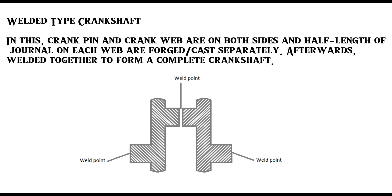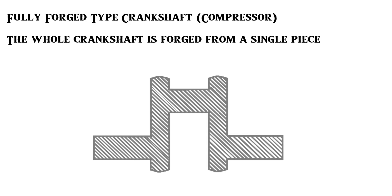In the welded type crankshaft, the crank pin and crank web are on both sides, and half the length of the journal at each web is forged or casted separately, then welded together to form a complete crankshaft. The fully forged type crankshaft has the whole crankshaft forged into a single piece and is used in compressors.